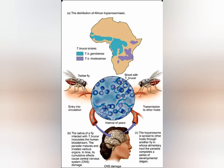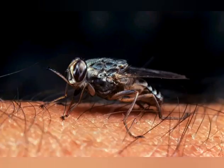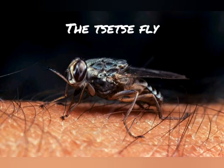It's also important to know that Trypanosoma brucei gambiense causes over 98% of reported cases, and it is transmitted by the bite of an infected tsetse fly — that's the name of the insect responsible for the transmission of African sleeping sickness.